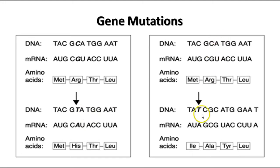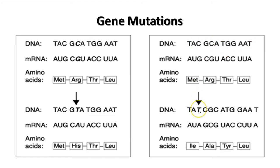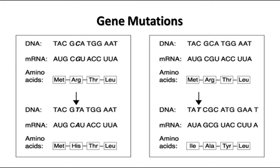Here we have a different kind — an insertion. We're inserting an extra nitrogen base. For example, our original sequence was TAC, GCA, and we inserted an extra thymine. That's going to change all the codons that the messenger RNA codes for, which changes the entire sequence of amino acids and produces extra ones at the end. So this is going to be a nonsense protein — it's not going to make any sense at all.